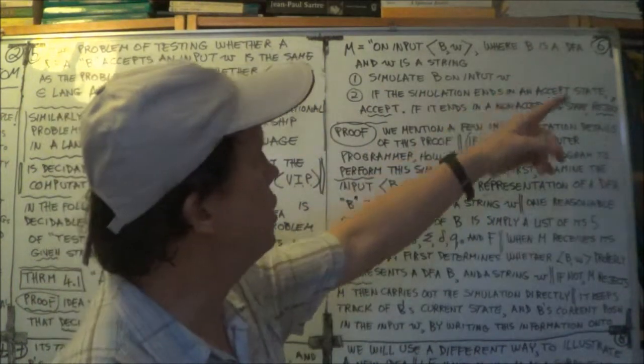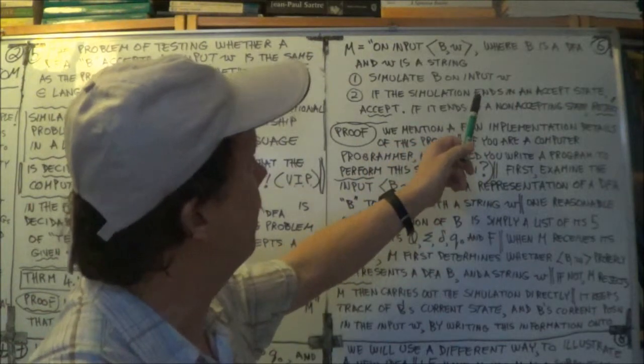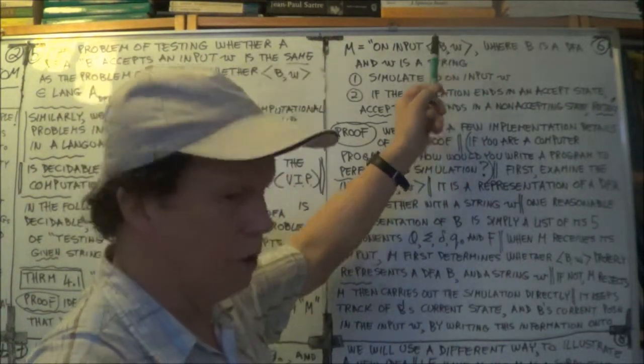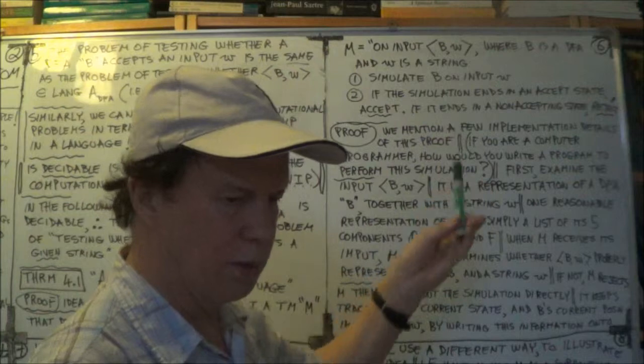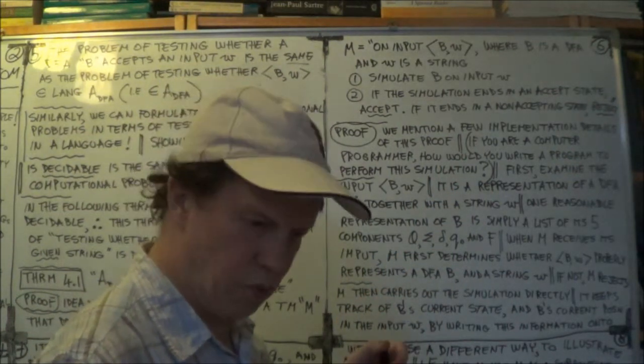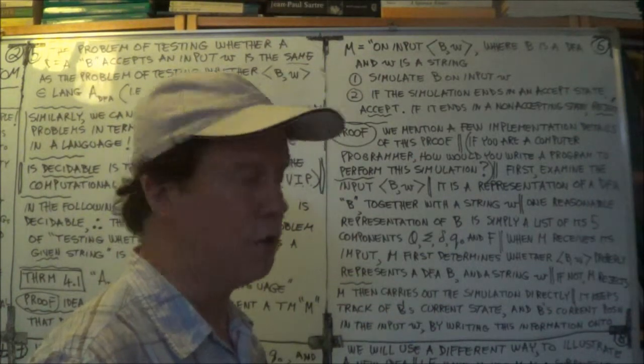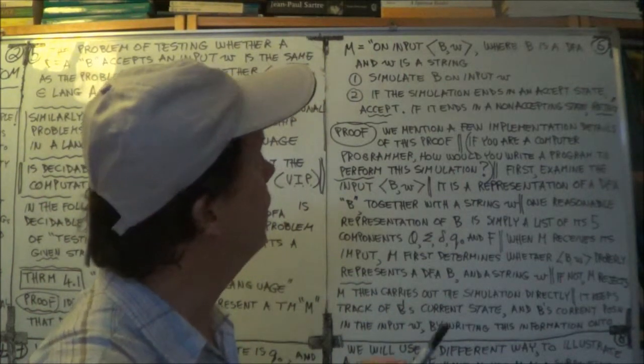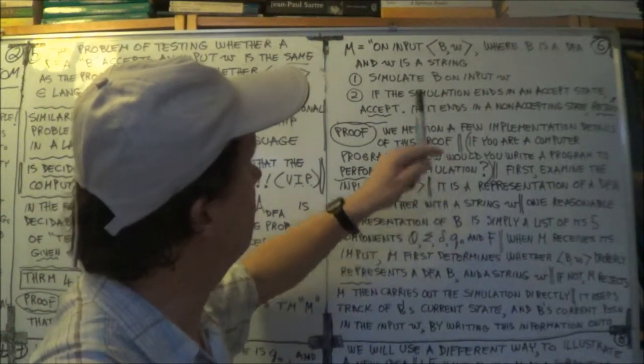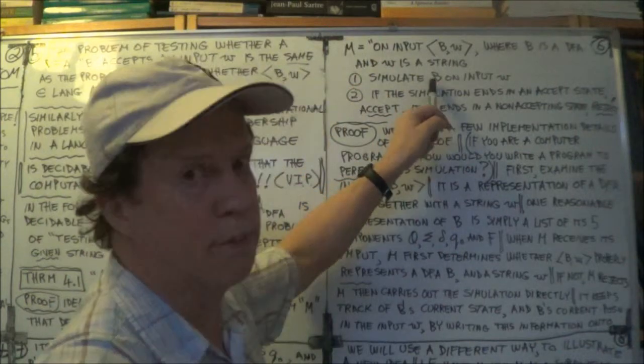Now, as the simulation runs, hold on. B is a finite automaton, right? So a finite automaton always stops. And when does it stop? After it has read the last symbol of its input string. Because M is simulating B, so M has to behave like B.